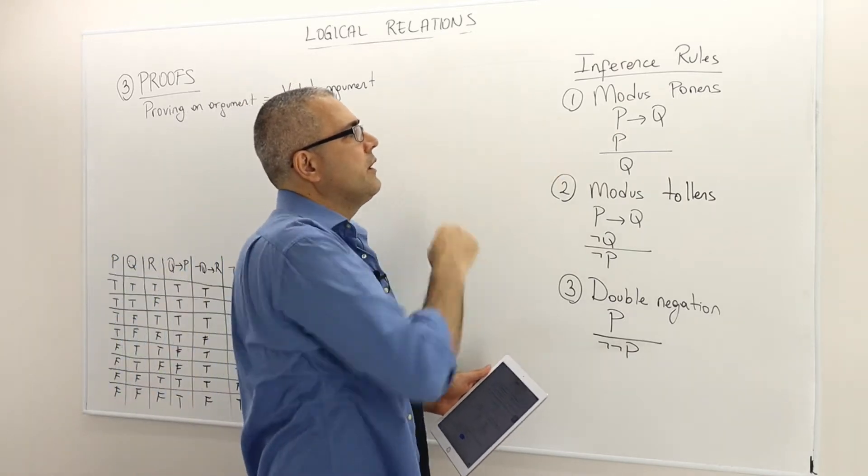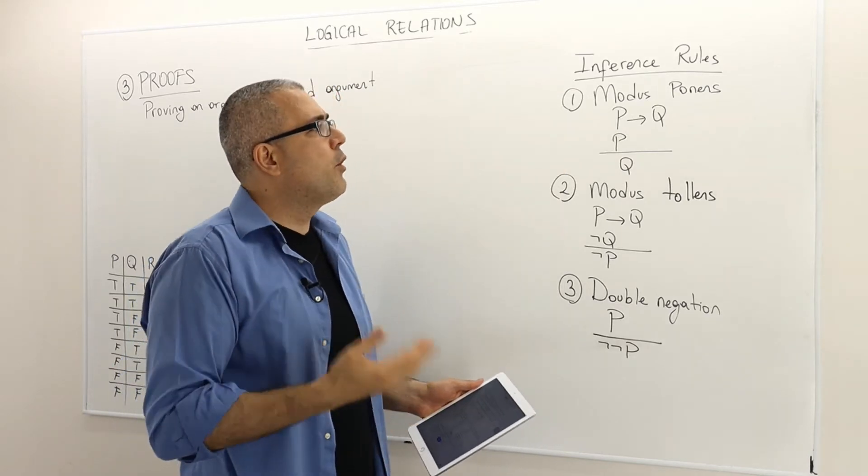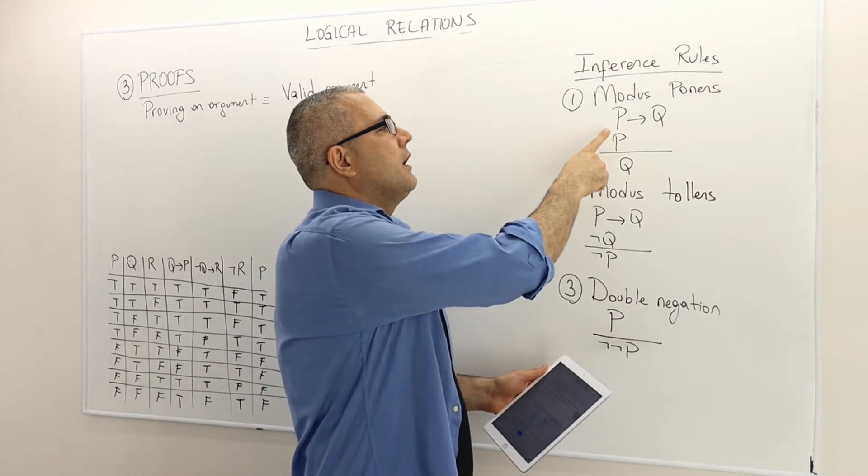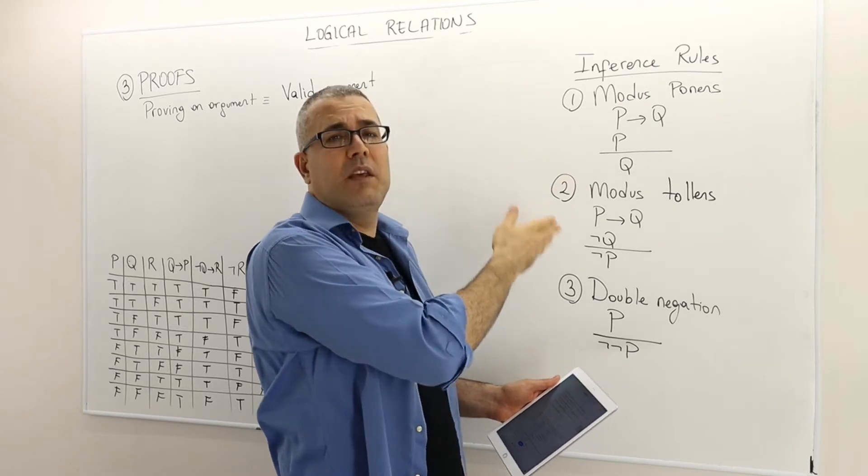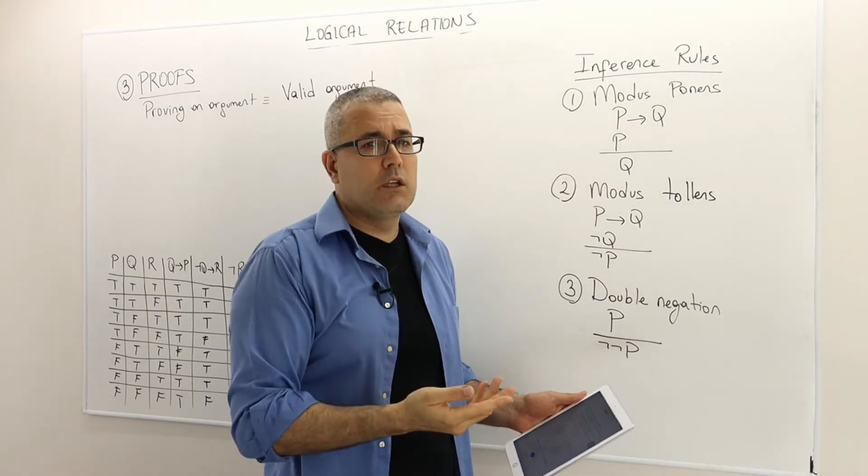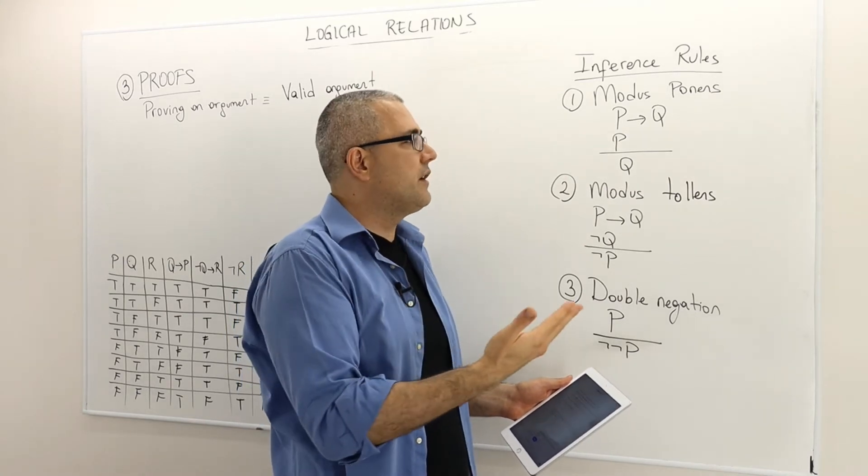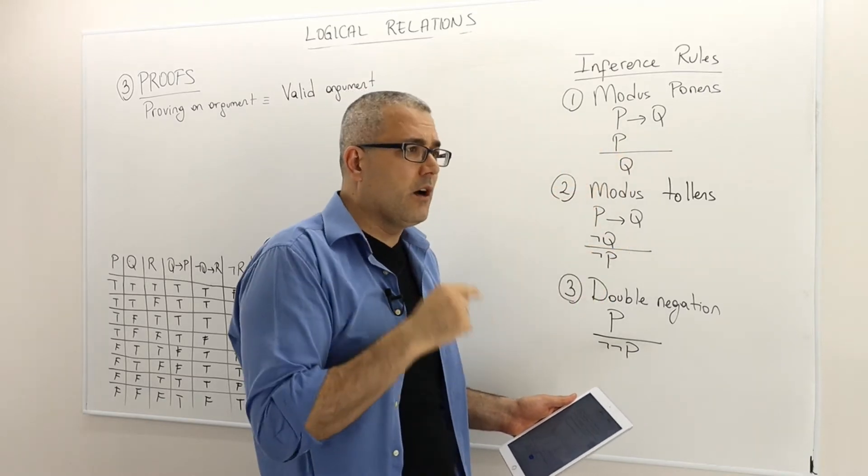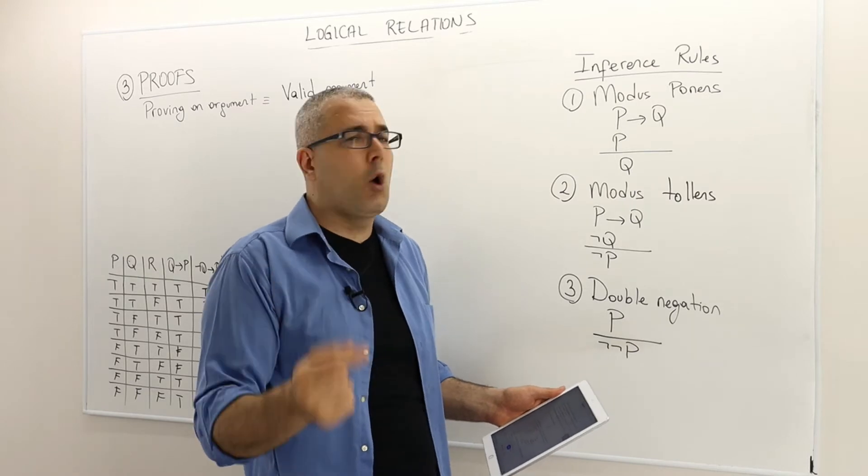So there are three inference rules I would like to introduce in this section. The first one is called modus ponens. Modus ponens says, if P implies Q and P, if these are my two premises, then the conclusion is Q. So it basically says, if your two premises P implies Q and P are true, then Q must be true. This is modus ponens.